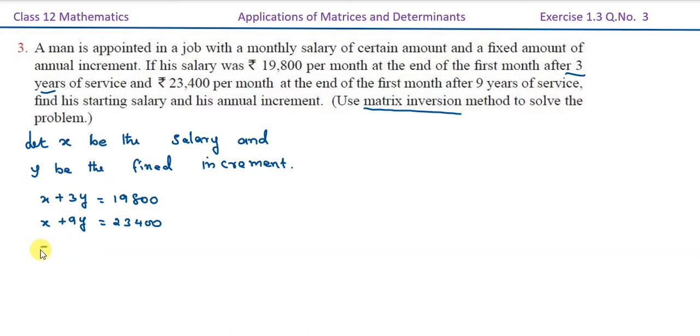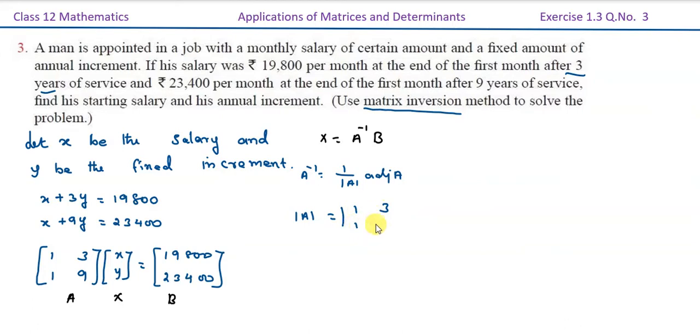We will write in the form of matrix inversion method. In the form it will be A and X and B. We have to calculate modulus of A. Modulus of matrix [1, 3; 1, 9] equals 9 minus 3, that is 6. Modulus of A is not equal to 0, therefore A inverse exists.